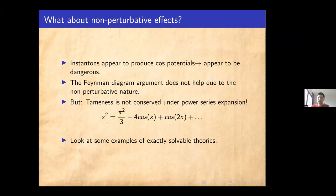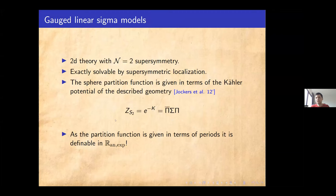Let's look at some toy examples. The first example is the gauged linear sigma model. These are two-dimensional N=2 supersymmetric models which, due to the high degree of supersymmetry and low dimensionality, are exactly solvable using supersymmetric localization techniques. This was done by Jockers et al. already in 2012. The resulting sphere partition function is actually given by the Kähler potential of the compactification geometry described by the gauged linear sigma model. The Kähler potential is expressible in terms of the periods of the geometry, and as before, periods are tame functions. So the whole sphere partition function is non-perturbatively tame and definable in the structure R_an,exp.